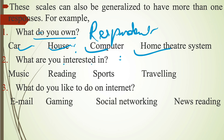What are you interested in? — music, reading, sports, traveling. In this case, the respondent can also select more than two options from the responses. The third example is: What do you like to do on the internet? — email, gaming, social networking, and news reading. These four responses are given to the respondent, and the respondent can select more than two responses for the particular question.